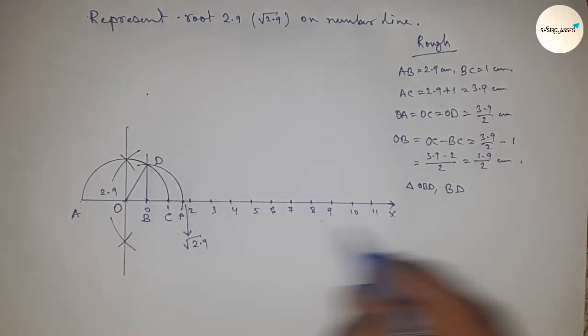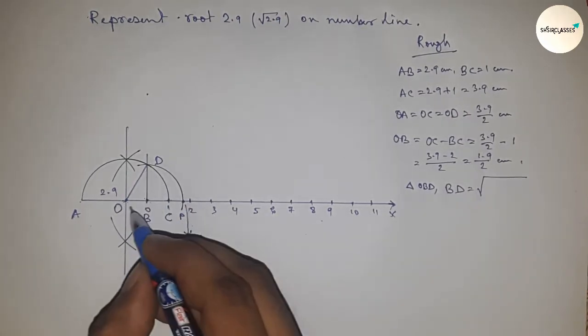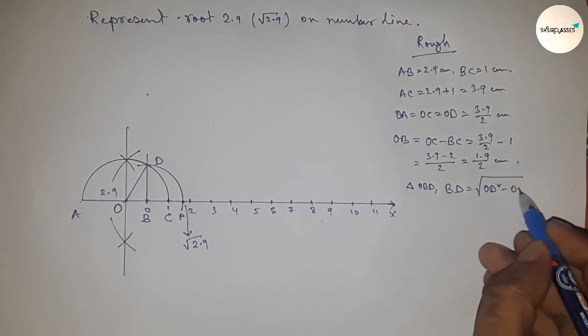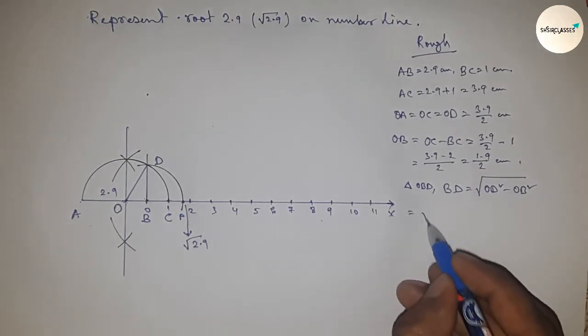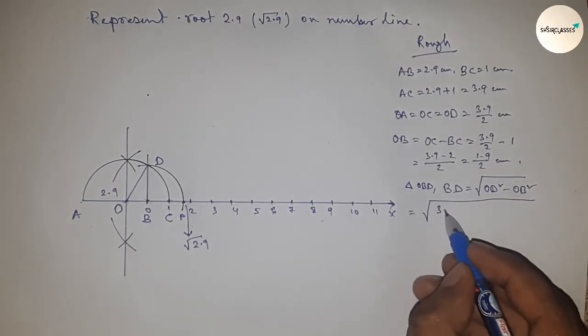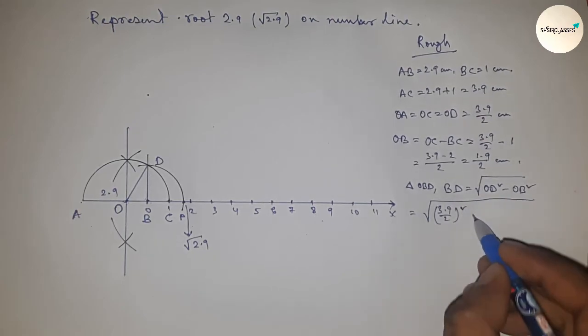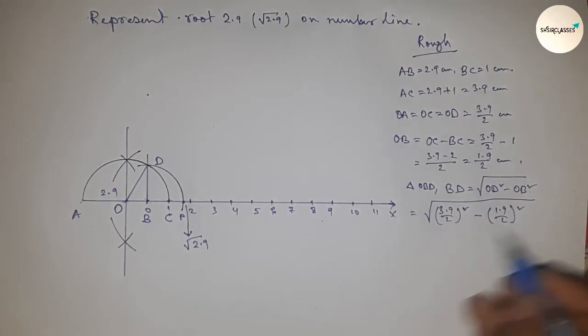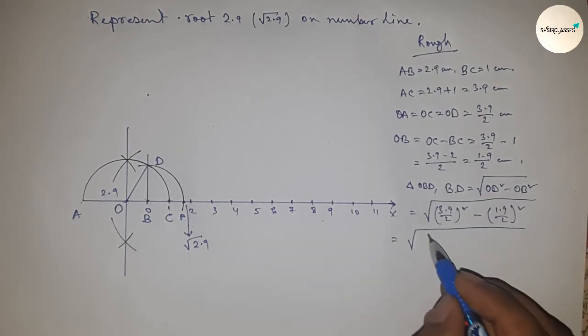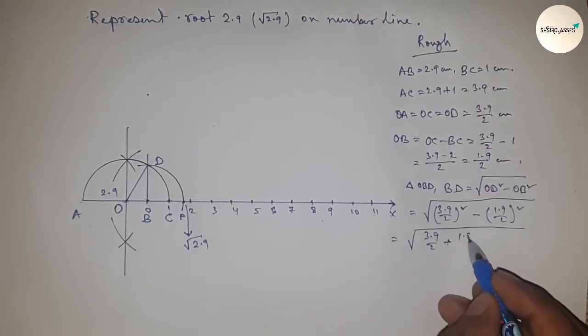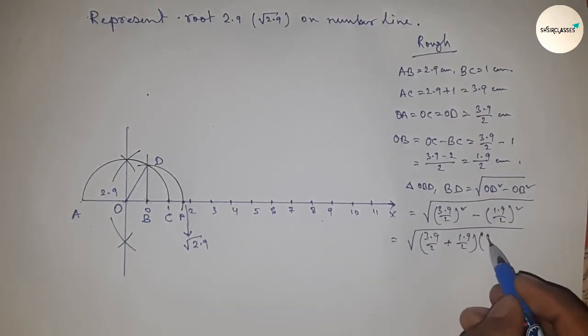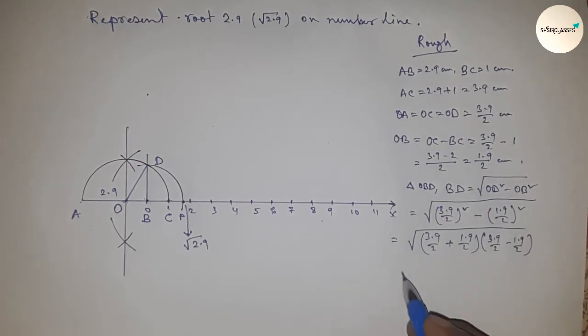We can write BD equals square root of, by Pythagorean theorem, hypotenuse squared minus base squared. Putting the value of hypotenuse (3.9 by 2) whole squared minus base (1.9 by 2) whole squared. Now I'm going to use the formula a squared minus b squared equals (a plus b) times (a minus b).